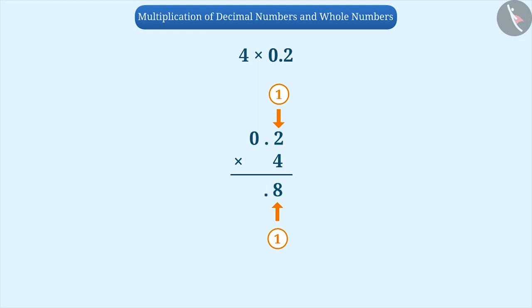Since there is no whole number before the decimal point, we place a zero before it. Therefore, we get the value of 4 multiplied by 0.2 as 0.8.